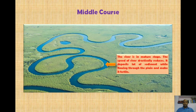In the middle course, the river is in a mature stage. The speed of the river drastically reduces. It deposits a lot of sediments while flowing through the plain and makes the land fertile.